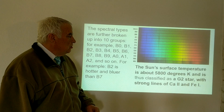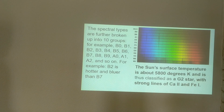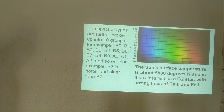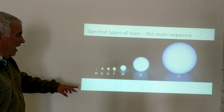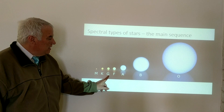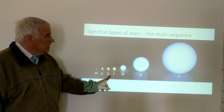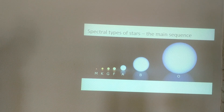The sun is classified as G2, with strong calcium II and iron lines. Other stars with the same spectral type as G2 have the same surface temperature as the sun. The sun falls just near the G category — it's a G2 type star, and that is a useful fact to remember.